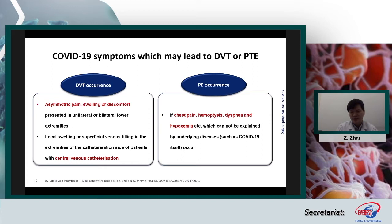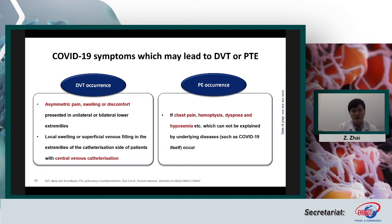Not only DVT and PE, but also pulmonary in-situ thrombosis may occur in COVID-19 patients. For diagnosis: if a patient shows asymmetric pain, swelling, or discomfort in a unilateral limb — especially in patients with central venous catheterization showing superficial venous engorgement — DVT should be suspected. If chest pain, hemoptysis, dyspnea, or hypoxemia cannot be explained by COVID-19 itself, pulmonary embolism should be considered.